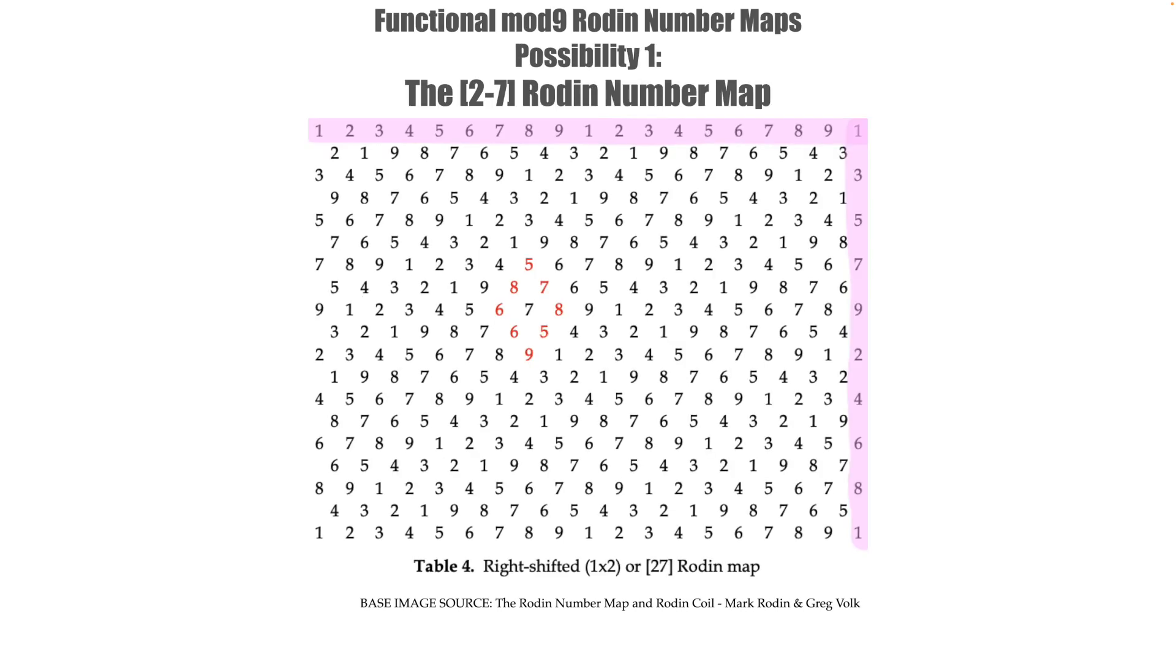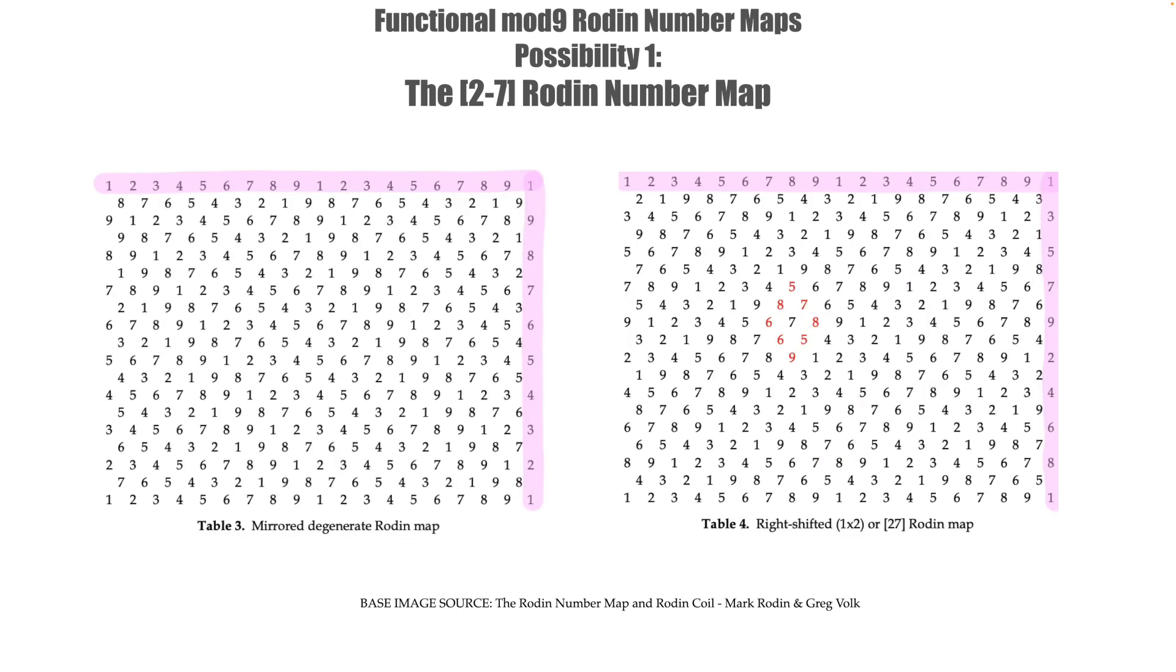Possibility 1, the 2-7 number map. To get here, taking our degenerate mirrored number map, we shift the numbers of the first, fourth and seventh rows below the top three steps to the right. Remember that the last horizontal and vertical columns just represent the infinitely repeating nature of the pattern. So they don't count here and we skip the last column and move directly to the first column when moving numbers in the primary rows as you can see here on this illustration.